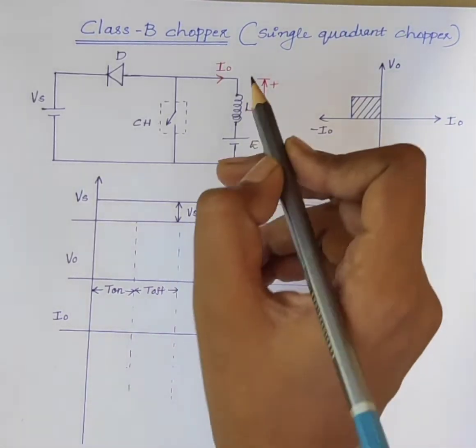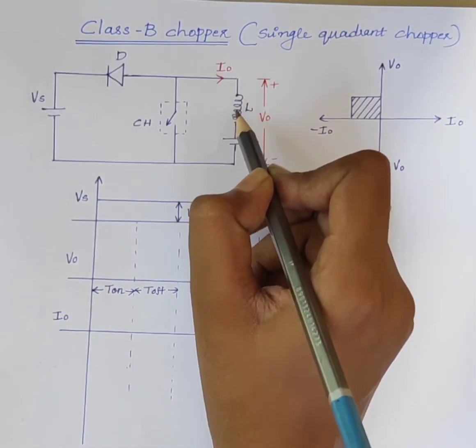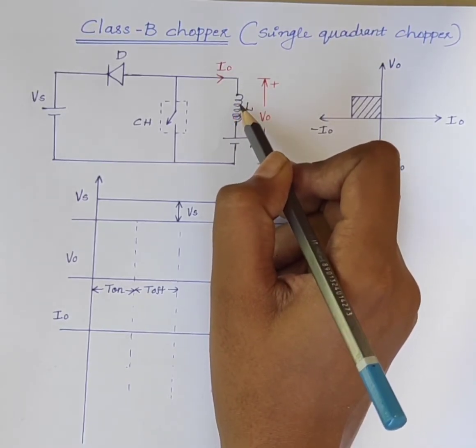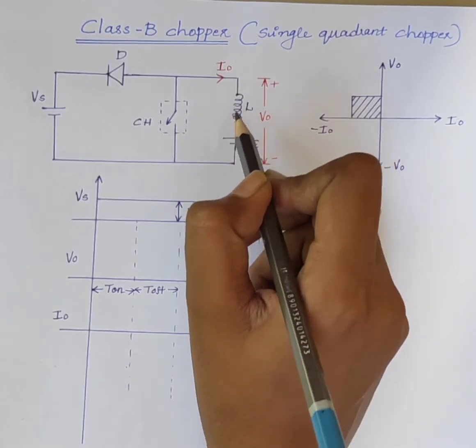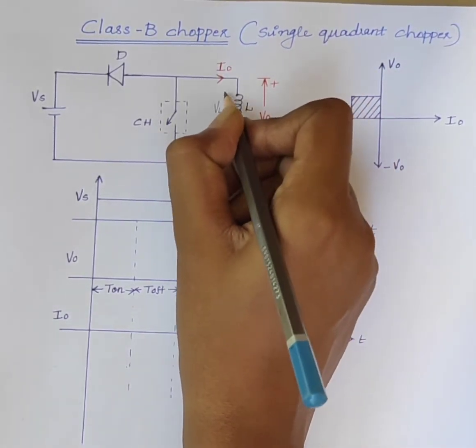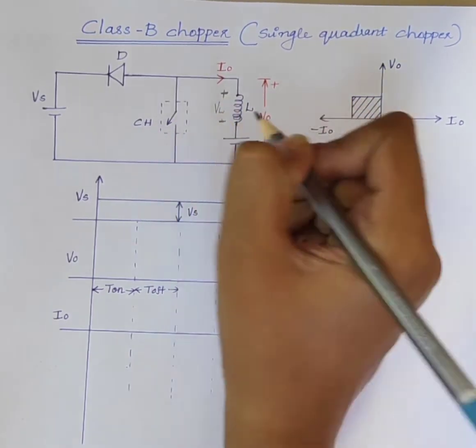Also, during the on period of the chopper, the inductor stores energy in it. And, the induced voltage in the inductor is VL. Here, positive. Here, negative.